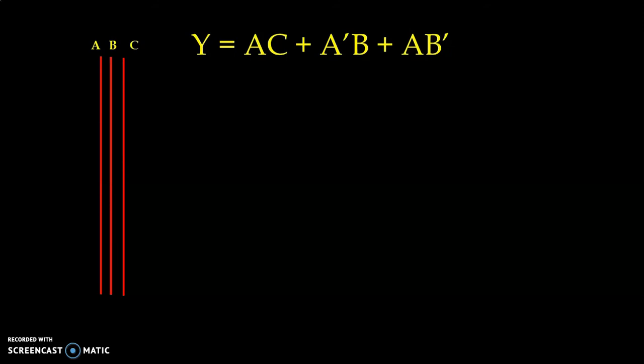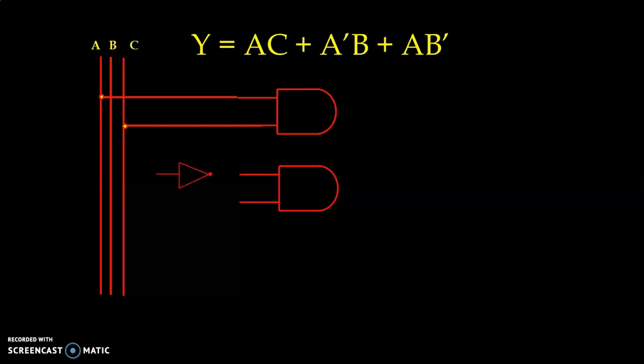Now for the first product term, we have to take AND gate and first product term that is AC. So we take directly input A as well as C. For the second product term, we require A bar dot B. For the A bar inverted input, we take NOT gate or Inverter. And B we take directly.